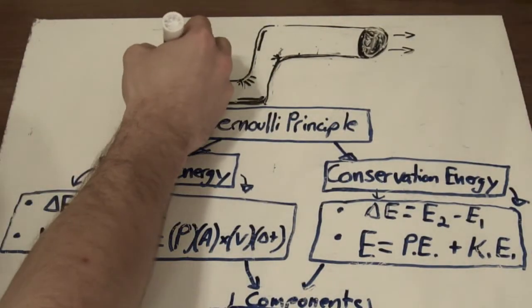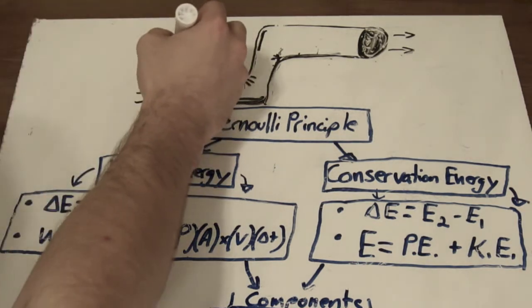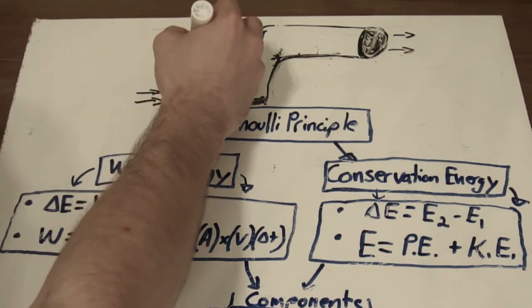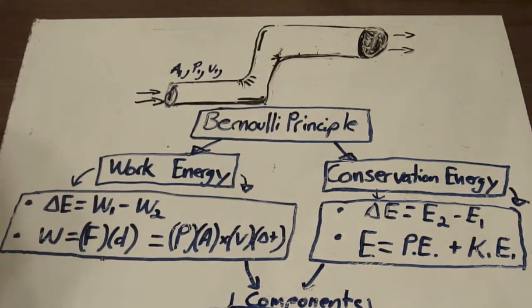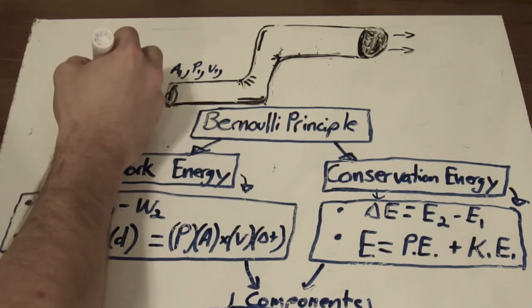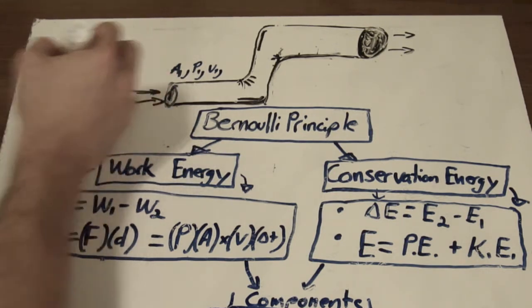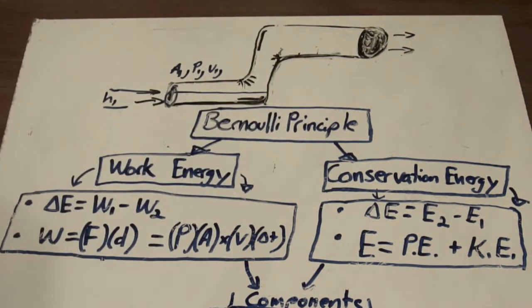We can say that this circle here is going to be A1. We're going to have a pressure up there, we're going to have a velocity up there, and we're also going to take it from the middle point here and say that this is H1. So the height of this pipe is going to be H1.